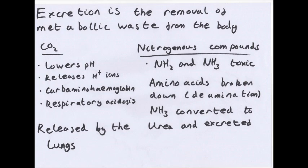So why are these substances excreted? Because they are harmful to the body. CO2 is transported in the blood and exhaled in the lungs. But when it goes into red blood cells, there is an enzyme called carbonic anhydrase, which converts carbon dioxide into hydrogen carbonate ions — that's HCO3 minus ions.